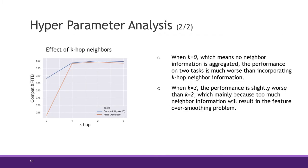We also investigated the effect of k-hop neighbors, testing k from 0 to 3. When k equals 0, meaning no neighbor information is aggregated, performance on both tasks is much worse than when incorporating k-hop neighbor information. When k equals 3, performance is slightly worse than k equals 2, mainly because too much neighbor information results in a feature over-smoothing problem.